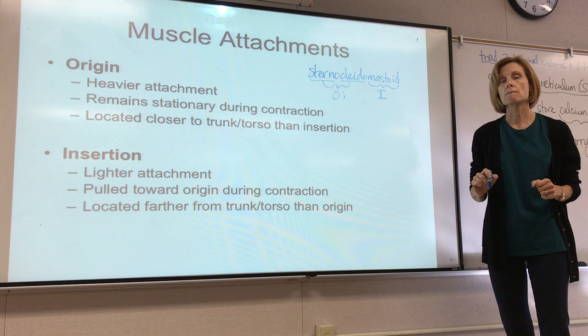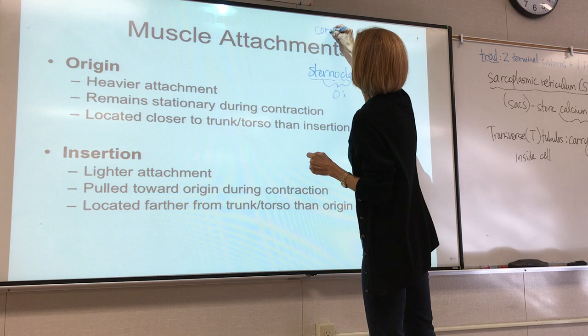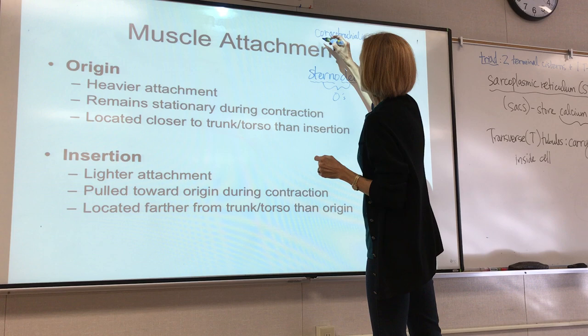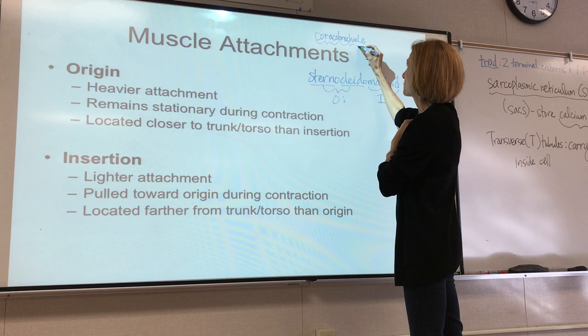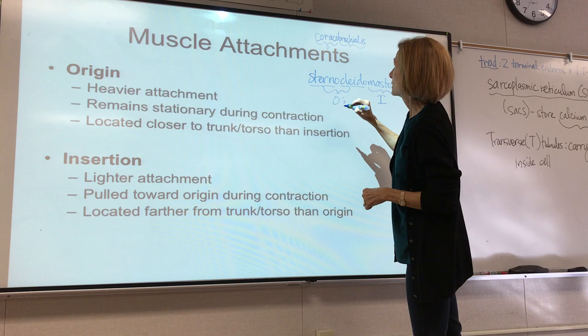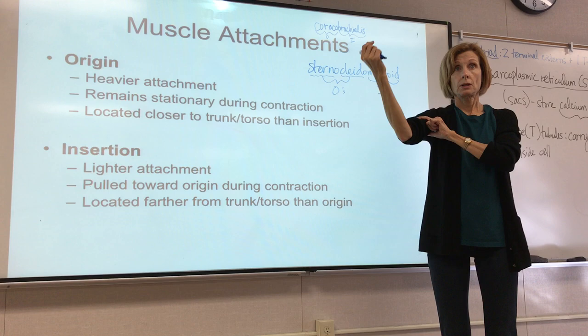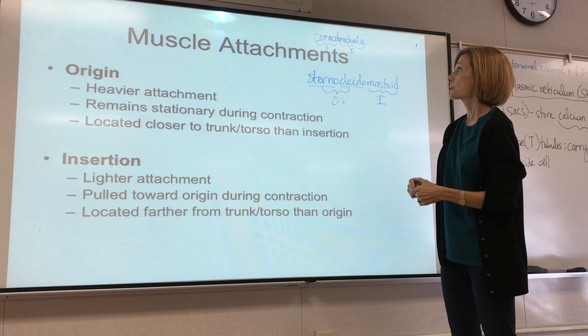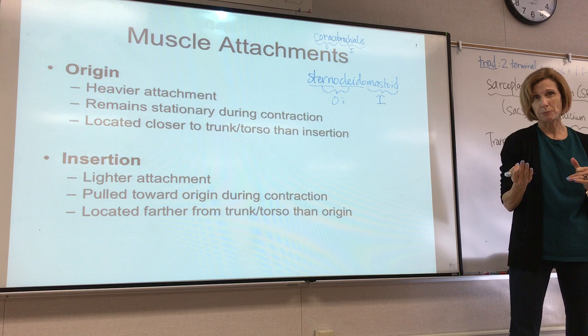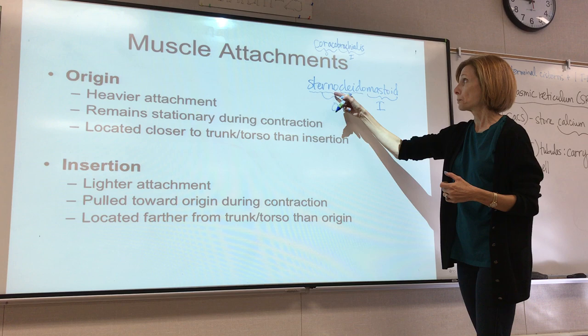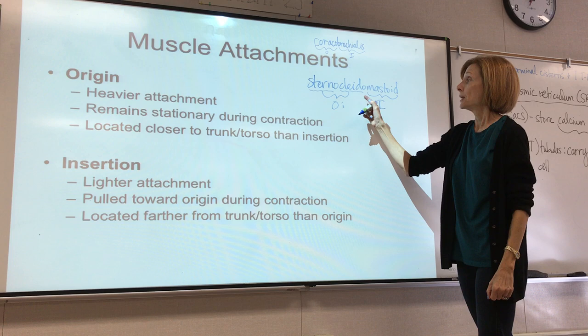Whenever a muscle is named after its attachments, the origin is always listed first and the insertion last. For instance, the coracobrachialis: 'coraco' refers to the coracoid process, and 'brachialis' refers to the brachial region — the arm. So the coracoid process is the origin, and the brachial region is the insertion. The coracoid process is closer to the trunk, making it the heavier, non-moving attachment.